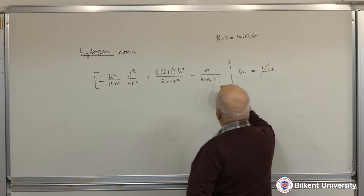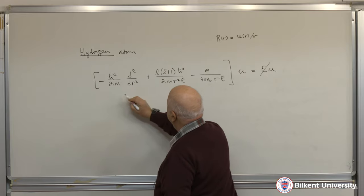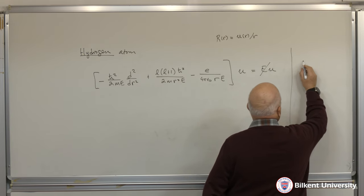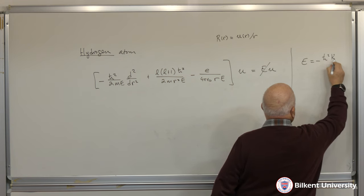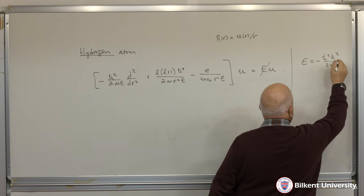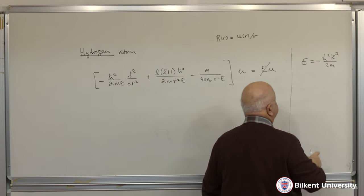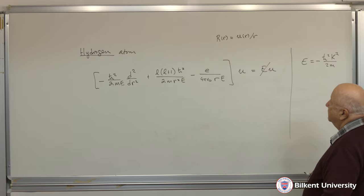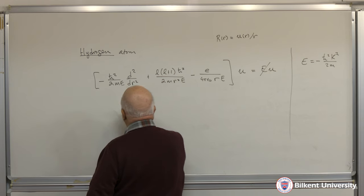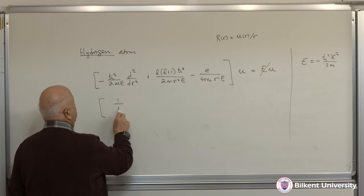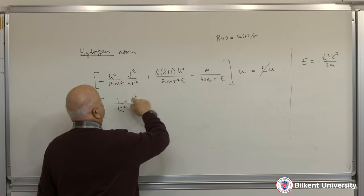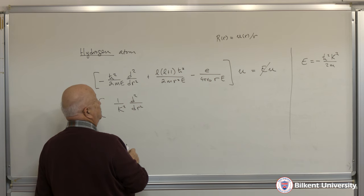So this is the equation for u of r equals E·u. We divided everything by E to get dimensionless quantities. We set E equal to minus h-bar squared k-squared over 2m. Obviously k-squared is positive, so E has to be a negative quantity. That's how we set this up so that we look at the bound states of the system.